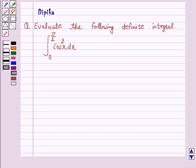Now in this question we will use the second fundamental theorem of integral calculus. So let's start the solution. Let I equal the integral from 0 to π/2 of cos²x dx.